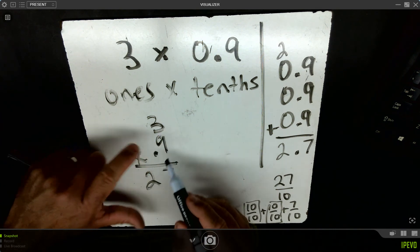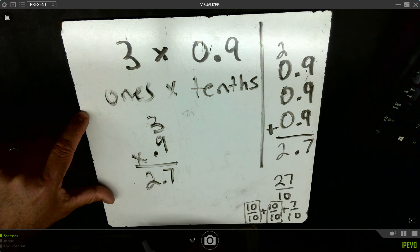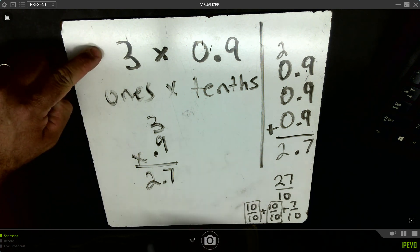But 1's times 10's means I will have 10's in my answer. Therefore, 3 times 9 tenths is still 2 and 7 tenths.